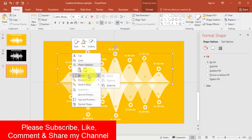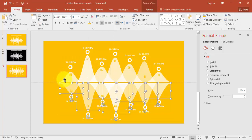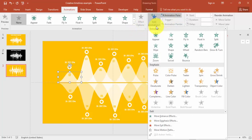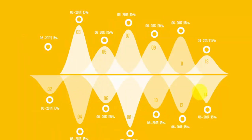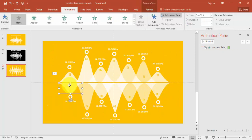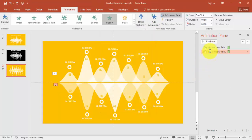The last step is to add animation. First ungroup the objects — right-click and ungroup both groups. Select the first object, go to Animation, open the Animation Pane, click Add Animation, choose More Effects, and select Peak In. You can do the same for the second object and set it to With Previous or After Previous.